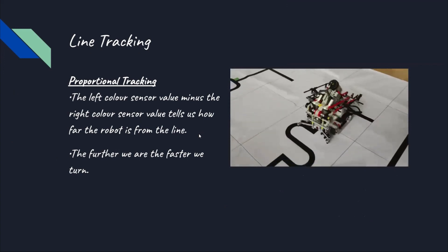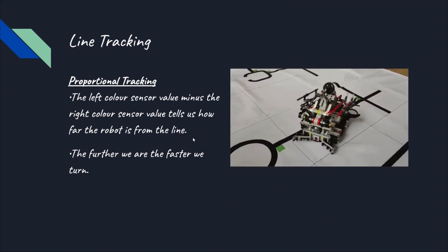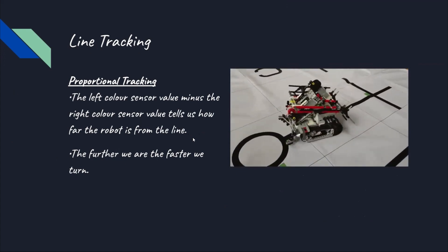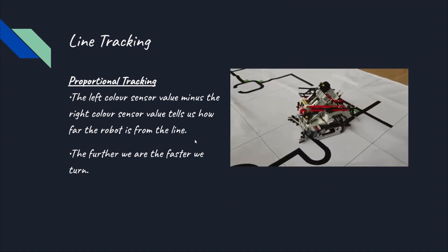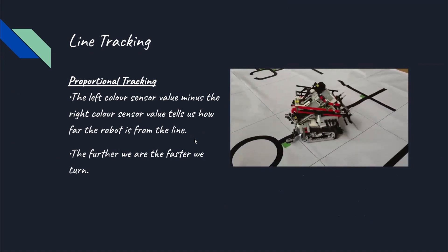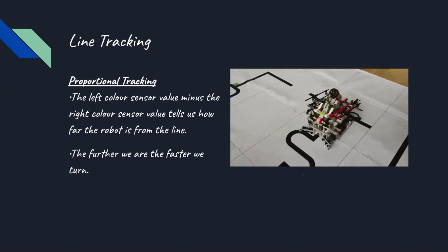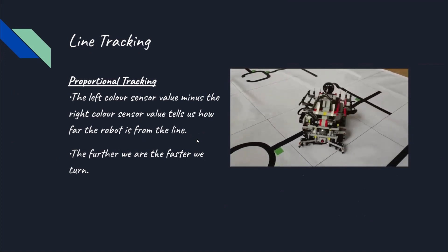For proportional tracking, the left color sensor minus the right sensor's value tells us how far the robot is from the line. The further the robot is, the faster we turn until the values are equal. When they are equal, the robot goes straight. We adjusted the maximum turning speed, which happens when the robot is farthest from the line, so that the robot can track sharp turns.